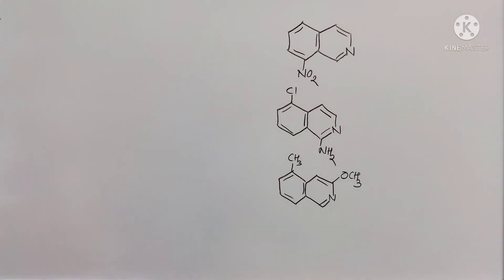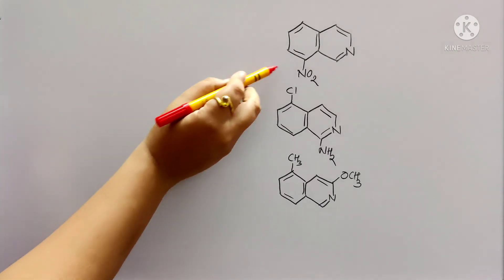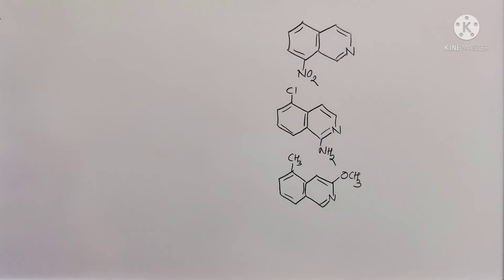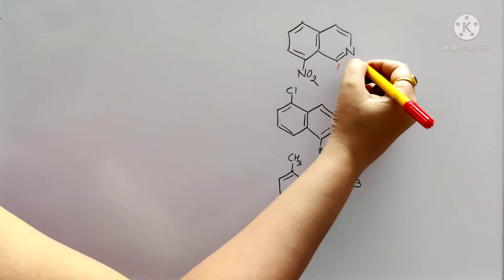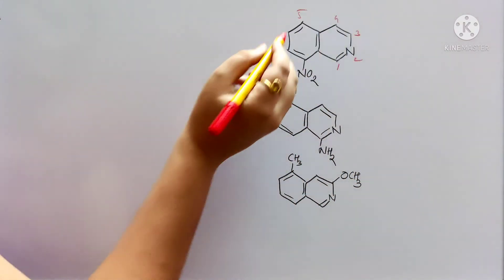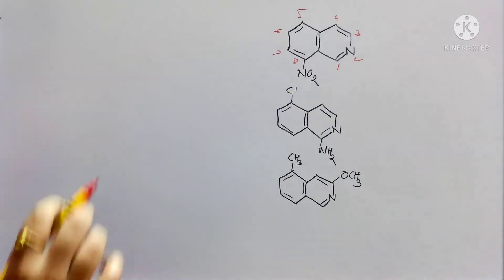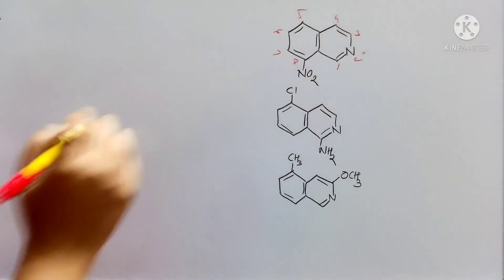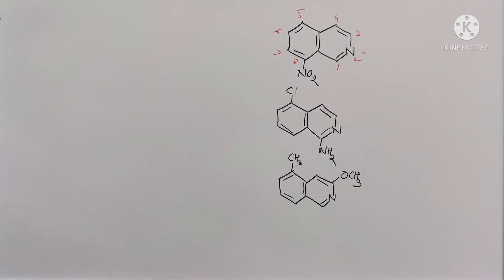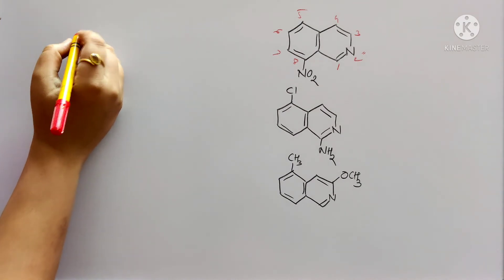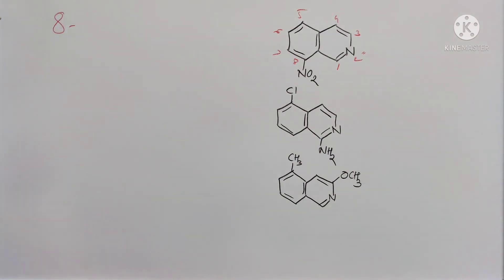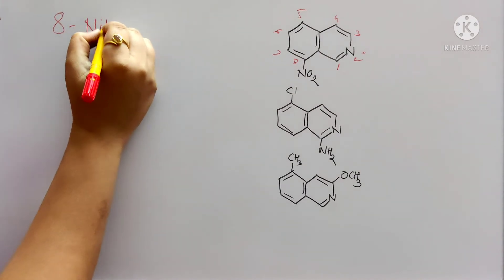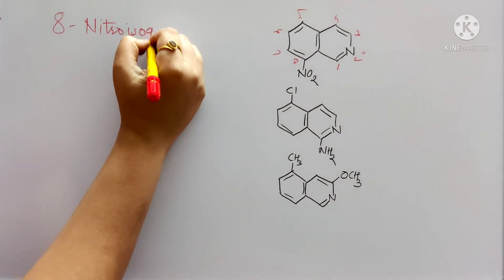Now these are some examples for isoquinolines. First, a nitro group is attached. Start numbering — always numbering starts from this position: 1, 2, 3, 4, 5, 6, 7 and 8. The nitro group is attached to the 8th position. Remember, in the case of isoquinolines, the heteroatom is at the 2nd position. So begin the name with nitro group: it will be 8-nitroisoquinoline.